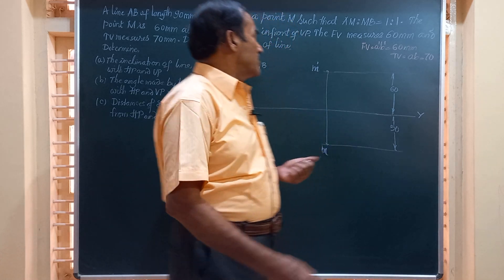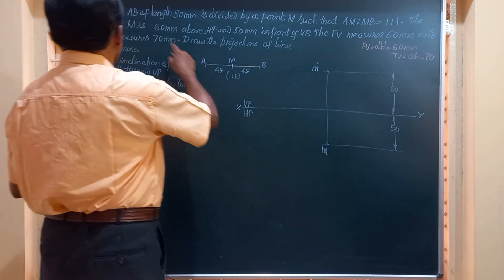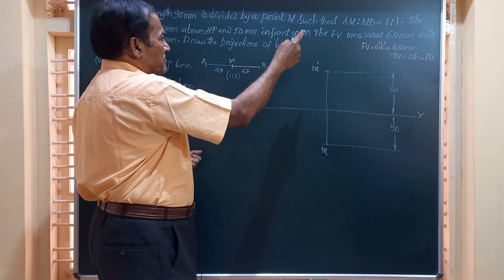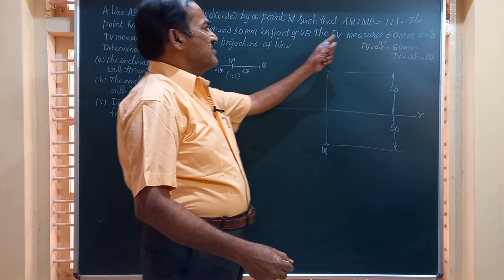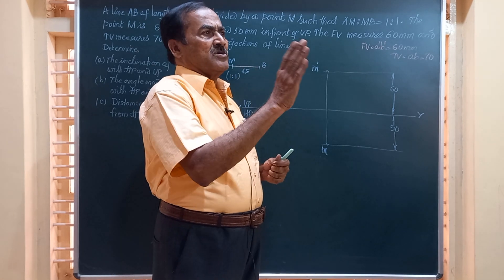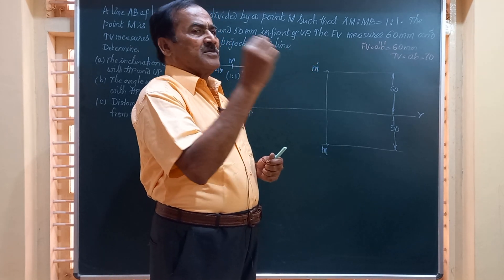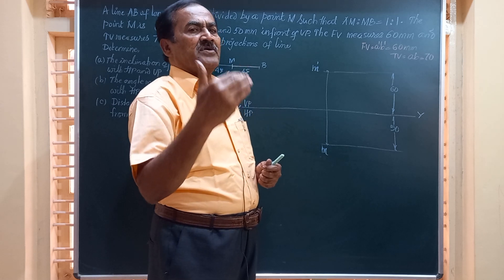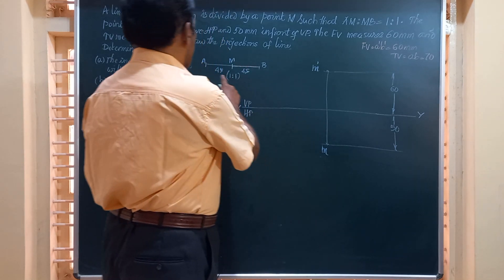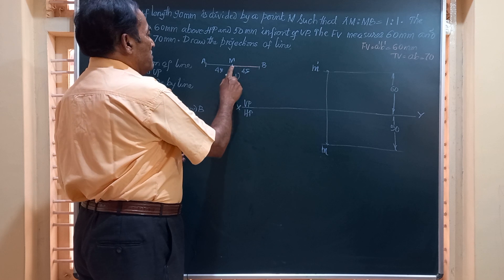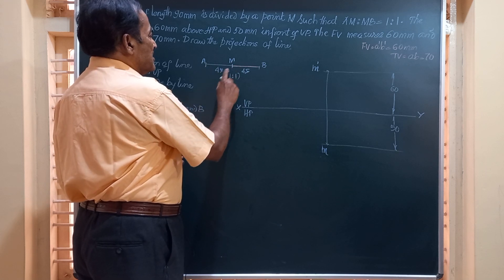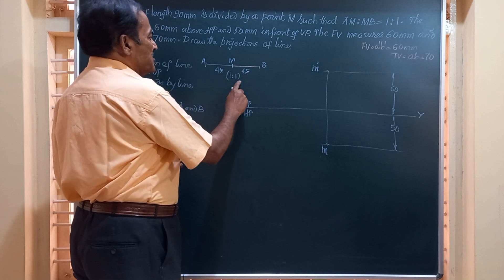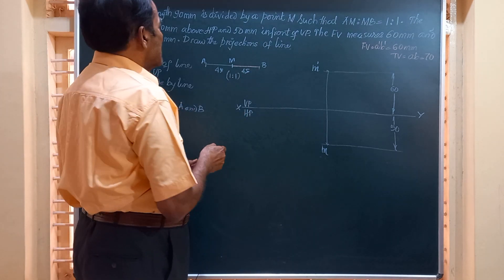The question reads: a line AB 90 millimeters is divided by a point M such that AM to MB equals 1 to 1. That means the total length is 90 and point M divides it into two equal parts, each having a length of 45 millimeters. So the line is AB, midpoint is M, dividing this line in the ratio 1 to 1, giving 45 and 45.